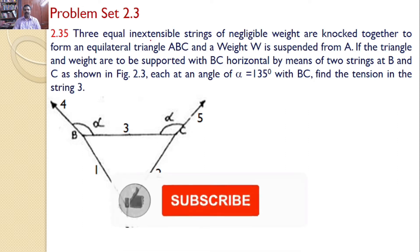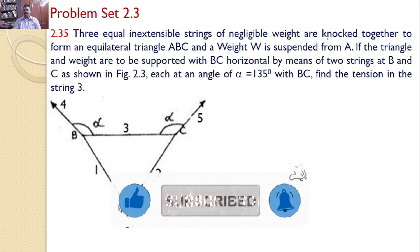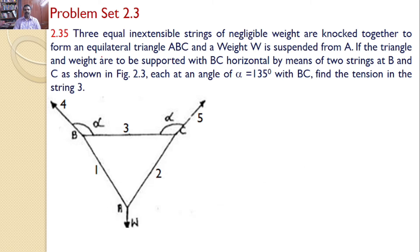Three equal inextensible strings of negligible weight are knotted together to form an equilateral triangle ABC, and a weight W is suspended from A. If the triangle and weight are to be supported with BC horizontal by means of two strings at B and C, each at an angle of alpha equal to 135 degrees with BC.